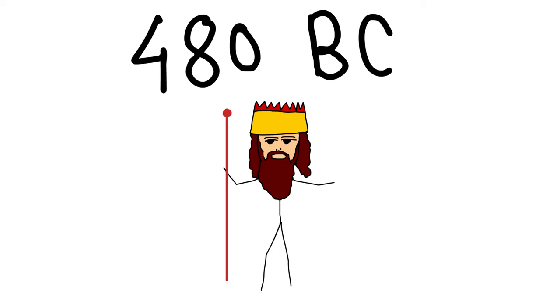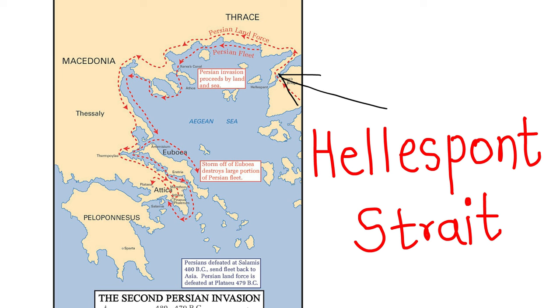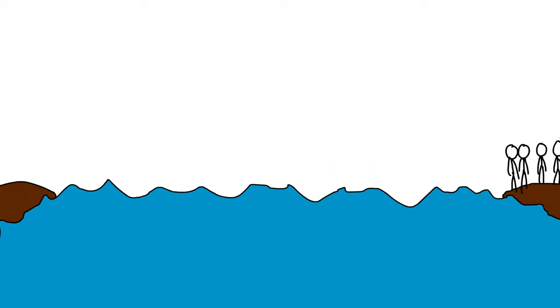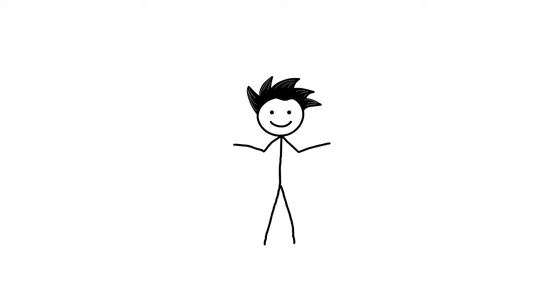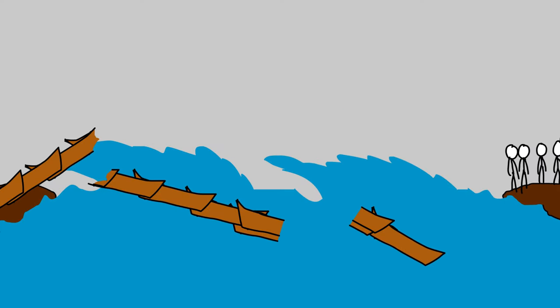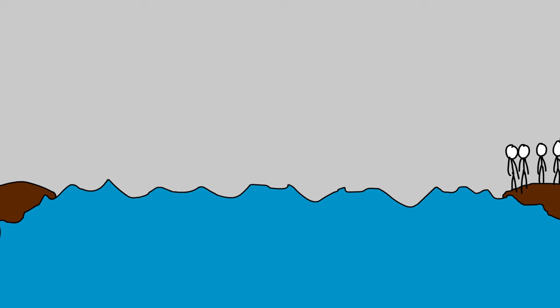In 480 BC, he journeyed with his enormous army to the Hellespont Strait, which separated Asia from Europe. To get his army quickly into Greece, Xerxes ordered to build the bridge across the strait. To construct the bridge, they used many small boats tied to each other. But before his army could cross the bridge, a storm arose at sea and destroyed the bridge and a significant portion of his ships.